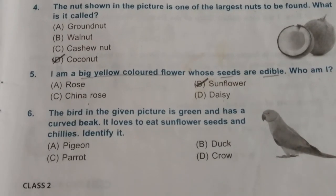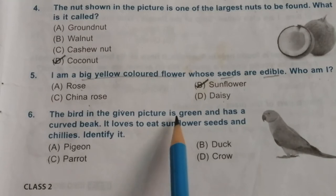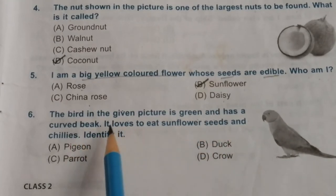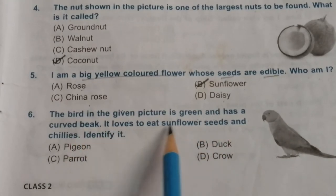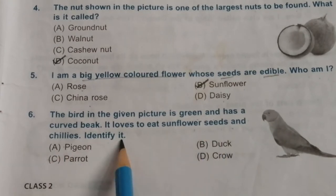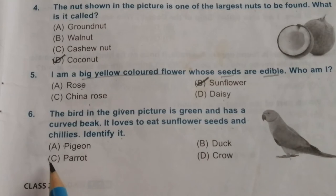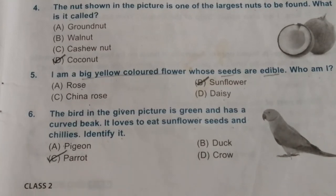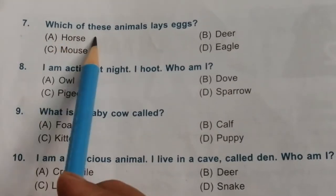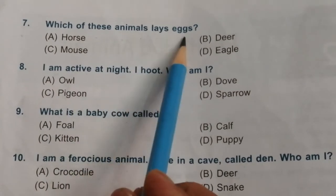Sixth one: the bird in the given picture is green and has a curved beak. It uses this beak to eat sunflower seeds and chillies. Identify it. The answer is parrot.